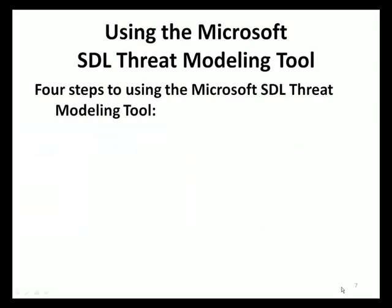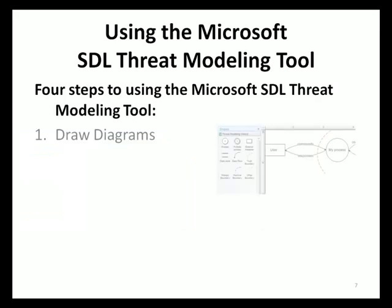There are four steps to using the Microsoft SDL Threat Modeling Tool. The first step is the draw diagram step, where application designers use visual controls to model their application designs as a data flow diagram. This data flow diagram will then be used by the tool to drive the rest of the threat analysis.